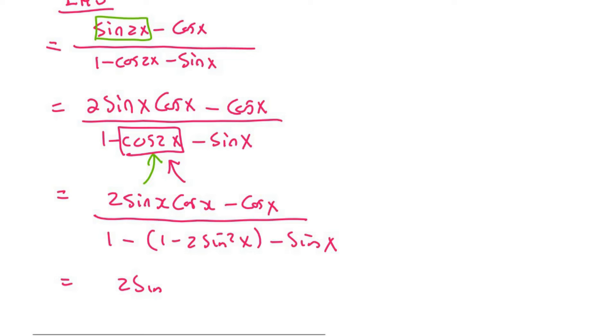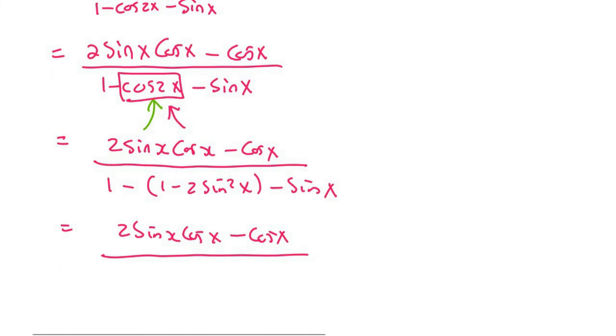At the top we're not going to do anything just yet but we can simplify the bottom because that's going to become 1 minus 1 plus 2 sin squared x minus sin x.